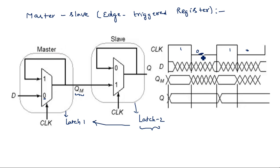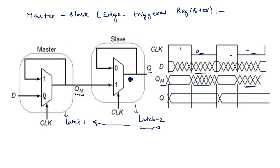When clock equals zero, QM equals D, so latch one (master) tracks the input. During clock equals one, master has no new output. For the slave output Q, when clock equals one, Q equals QM — the slave becomes transparent and propagates the master's stored value to the output.